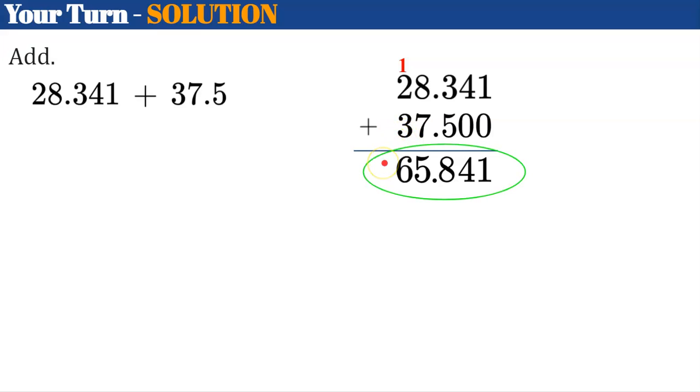There you have it. There's your answer: 65 and 841 thousandths, or 65.841. Let's move on to reviewing how to subtract decimals.